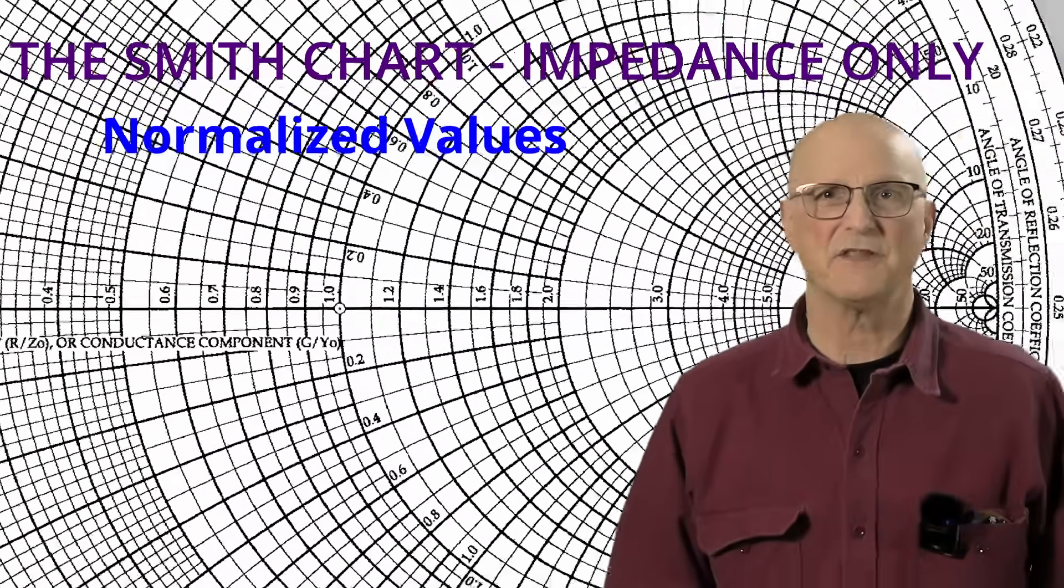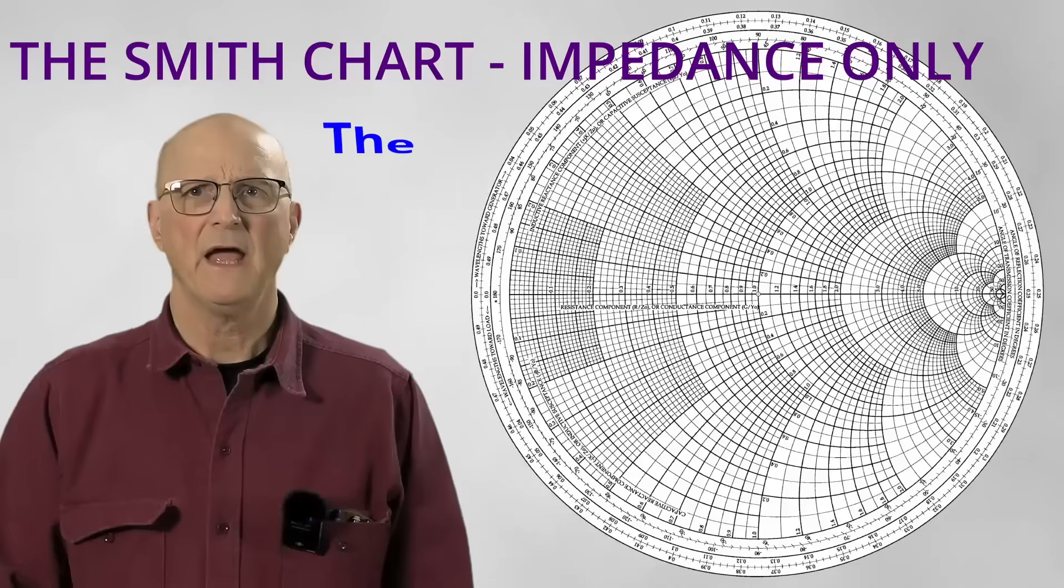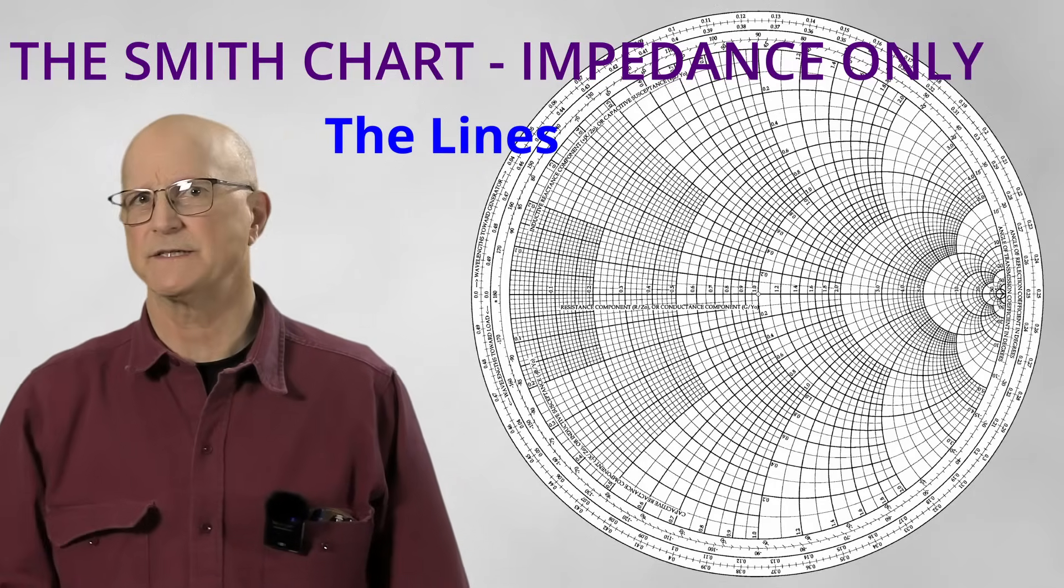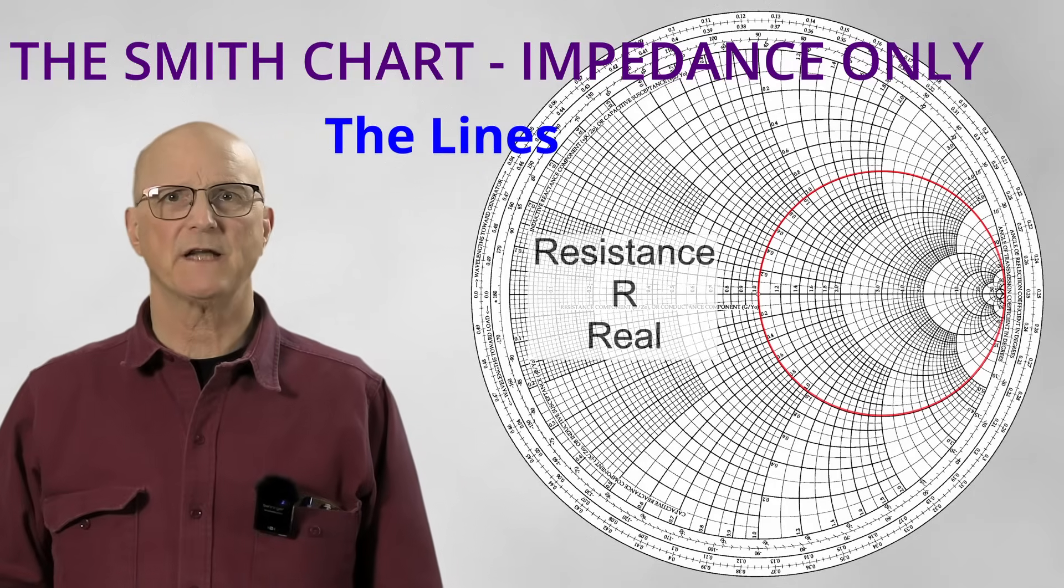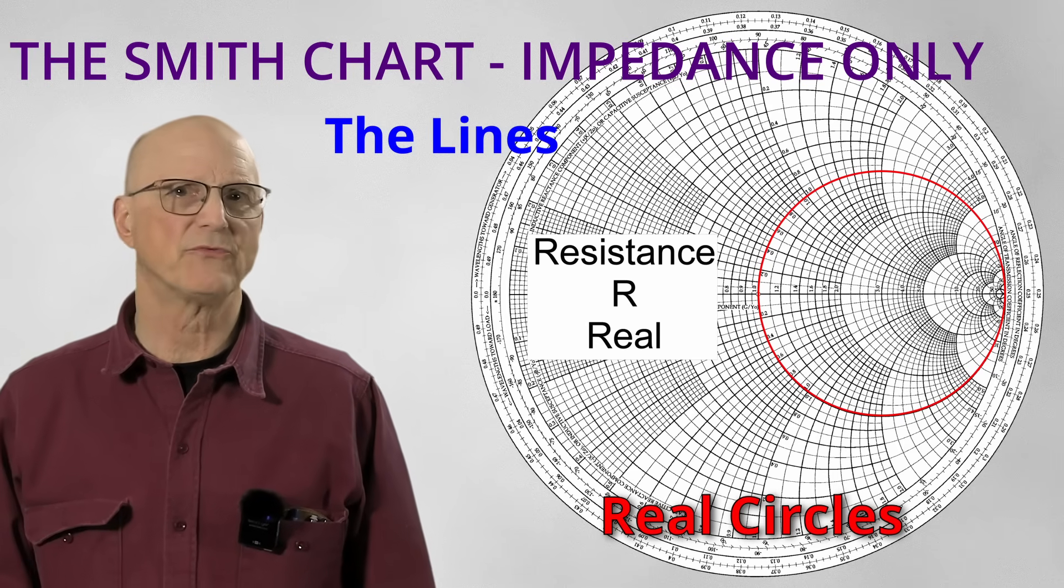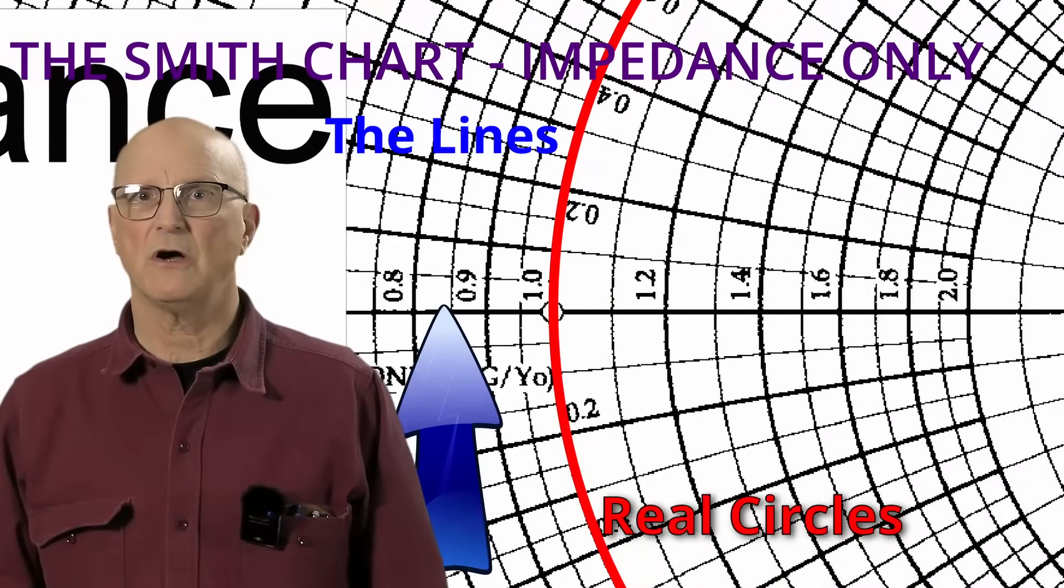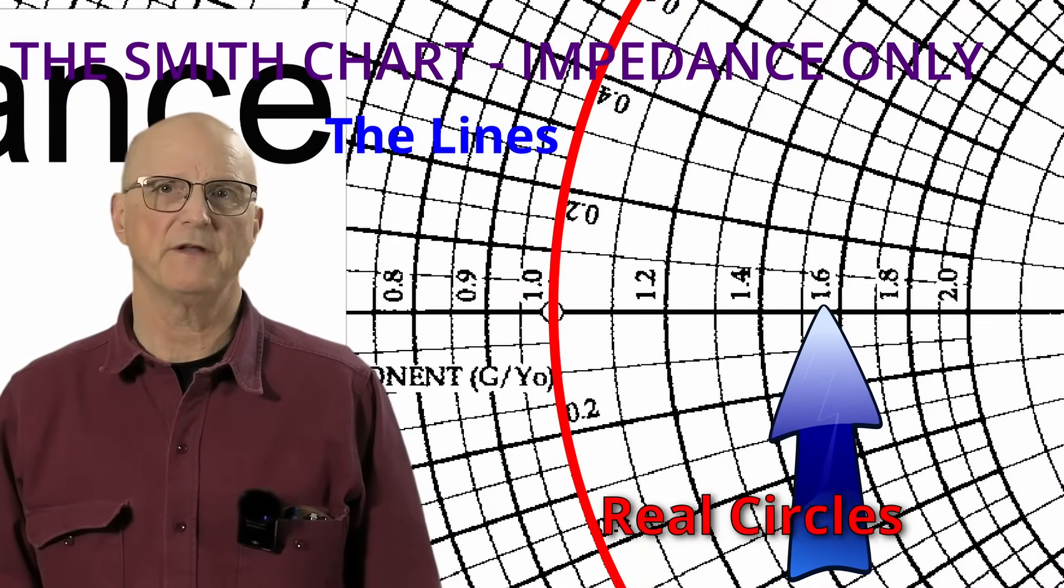Now, let's turn our attention to the mind numbing, eyes bugging out lines. There are two sets of lines. The first set of lines are the real circles whose circumferences are tied to the right side of the Smith chart. You can see their values along the equator of the Smith chart here.